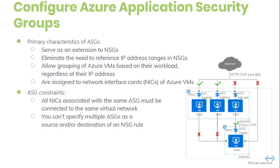NIC3 is a member of the ASGDB ASG. Though each network interface in this example is a member of only one ASG, a network interface can be a member of multiple ASGs, up to the Azure limit. None of the network interfaces have an associated network security group. The NSG is associated to both the subnet and contains the following rules: Allow HTTP inbound from internet, Deny database from all, Allow database from web. The rules that specify an ASG as the source or destination are only applied to the network interfaces that are members of that ASG. If the network interface is not a member of the ASG, the rule is not applied to the network interface even though the network security group is associated to the subnet.